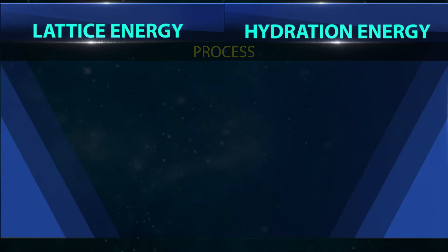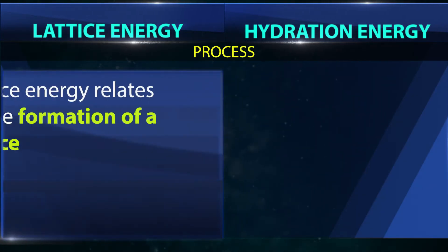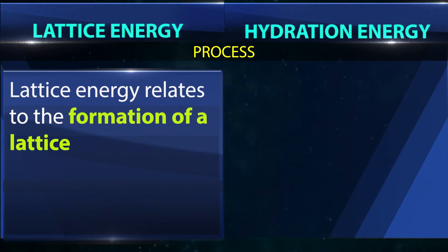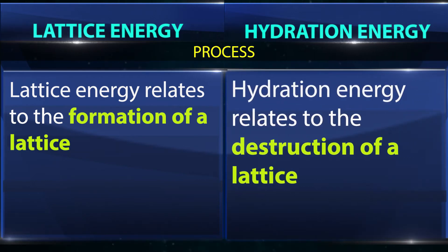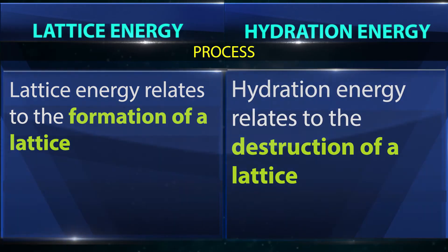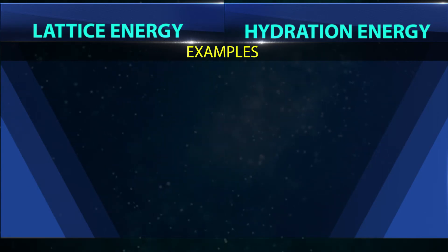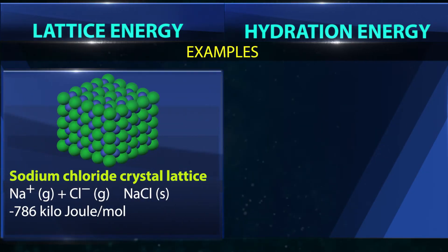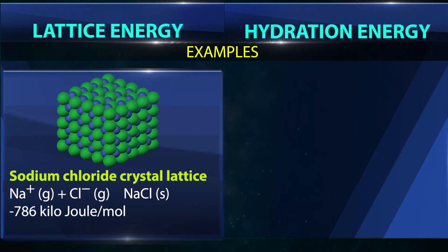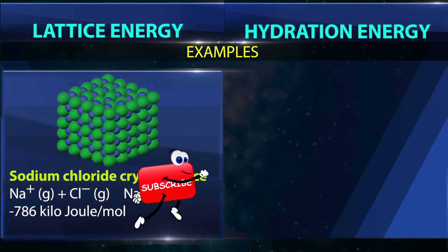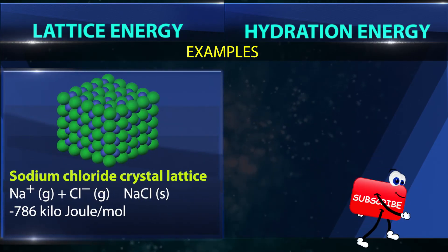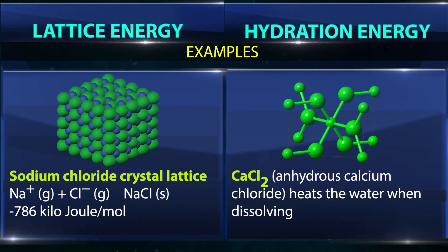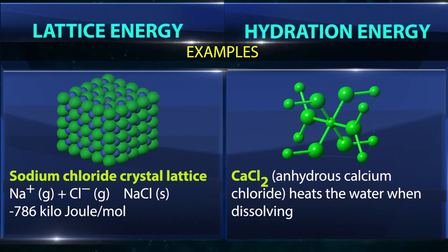Process — lattice energy relates to the formation of a lattice; hydration energy relates to the destruction of a lattice. Example — lattice energy: sodium chloride crystal lattice: Na⁺(gas) + Cl⁻(gas) gives NaCl(solid), which amounts to -786 kilojoules per mole. Example — hydration energy: CaCl₂ anhydrous calcium chloride heats the water when dissolving.